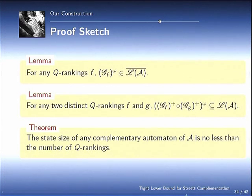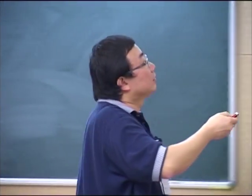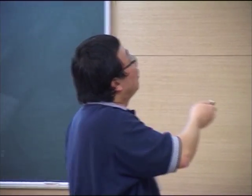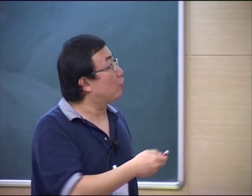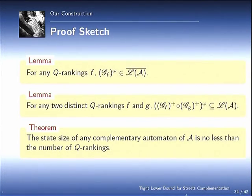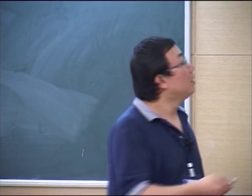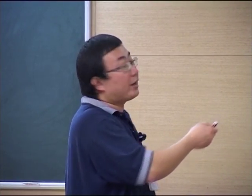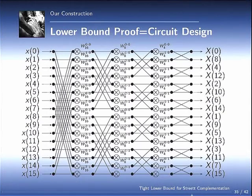Now we have two lemmas and one theorem. Basically, for any Q rankings F, this guy does not belong to L(A). Where for any two different Q rankings F, this guy is a subset of L(A). Now it's straightforward to get to the conclusion that the state set of any complementary automata of A is no less than the number of Q rankings. The number of Q rankings is going to serve as the lower bound of the complementation construction.